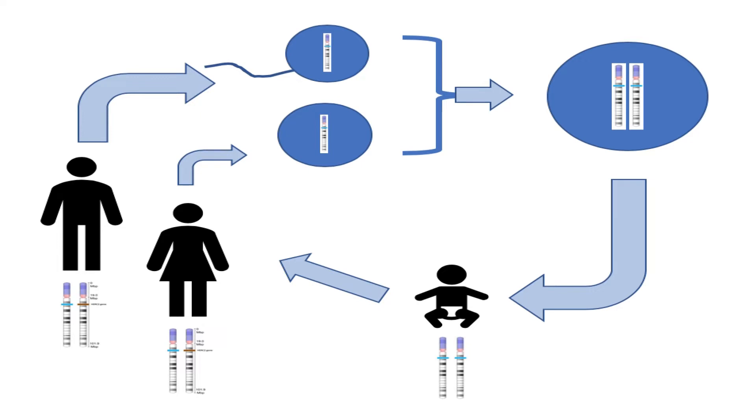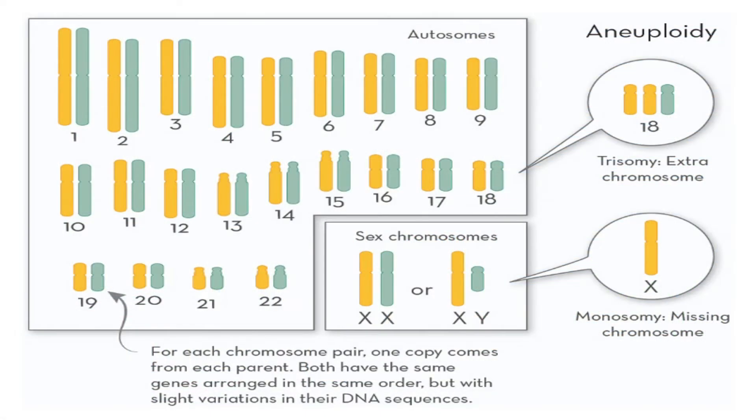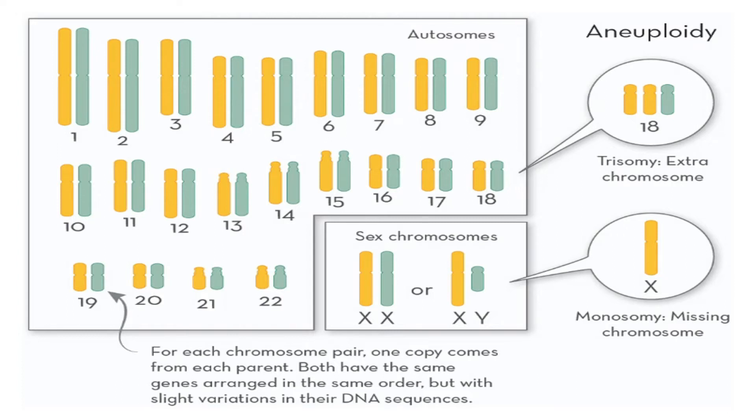When there is a very big change in the genetic material — when a whole chromosome is lost, added, or an extra chromosome is gained — it results in an abnormality that is very severe. Such abnormalities are called aneuploidies, and they usually result in a pregnancy loss because such a large change in genetic material is not viable with life.